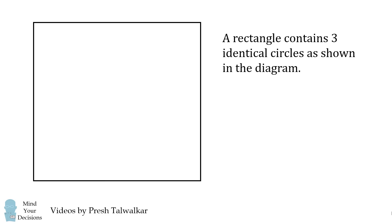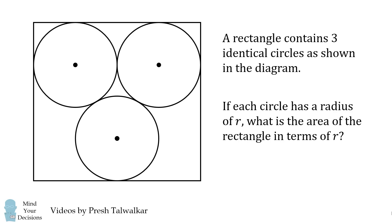A rectangle contains three identical circles as shown in the diagram. The top two circles are tangent to two sides of the rectangle, while the bottom circle is tangent to just one side. If each circle has a radius of r, what is the area of the rectangle in terms of r?